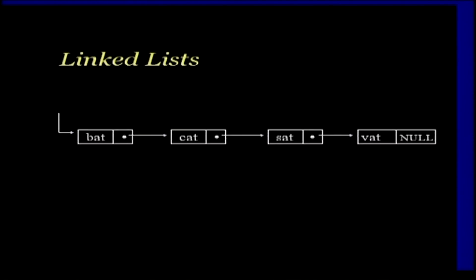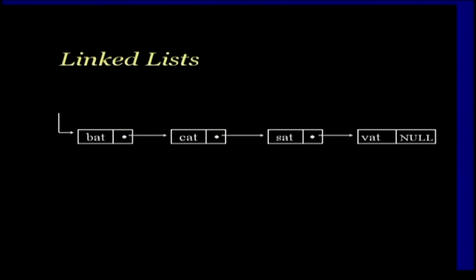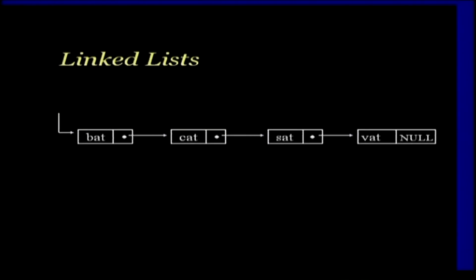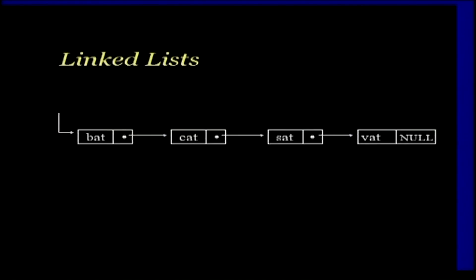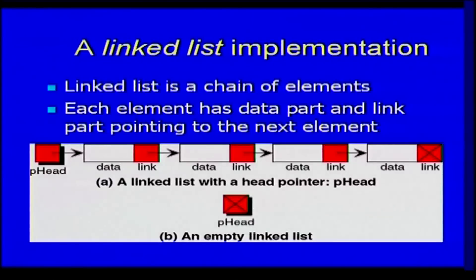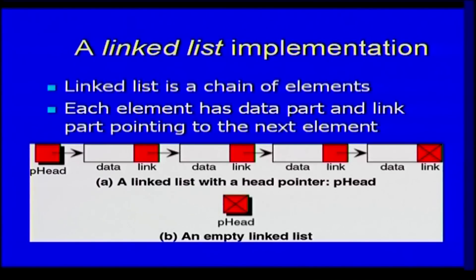For example, bat can be stored at the 1000th location, cat at the 200th location, sat at 600, and so on. In spite of that, because of a link between the addresses — each link points to the address of the next element — they become logically adjacent to each other, even though they are physically not adjacent. So a linked list is a chain of elements, and every node in the linked list has at least two parts: one is the data and the other is the link.